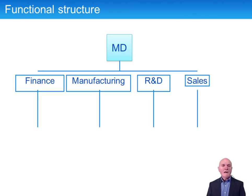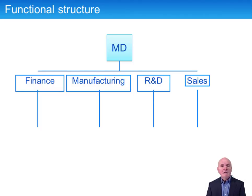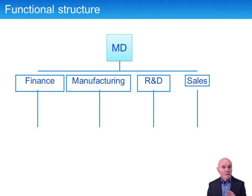Why is the structure of a business in a paper called Performance Management? It's there because the way a business is structured is going to determine the way it is managed. It's going to determine to whom various people report, and how different divisions or departments are going to be judged and managed in a way that maximises the overall company performance.